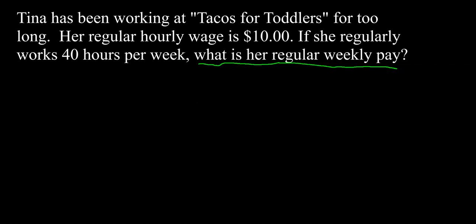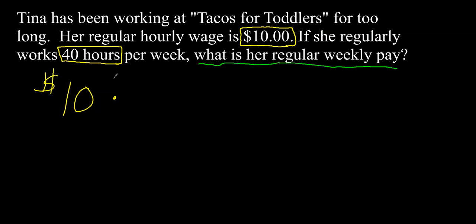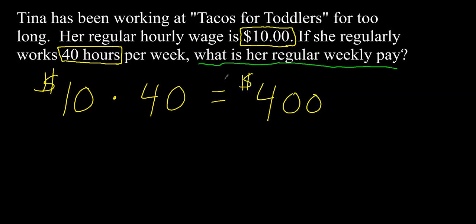She gets $10 per hour, and in one week's time she works 40 hours. So all I need to do is multiply the $10 times the 40 hours, and that'll give me how much she gets paid in a week. So 10 times 40 is $400 — that's how much she gets paid per week. Now you need to know that if you work over 40 hours in a week, you will get paid overtime, and we'll get into that in the next couple of problems.